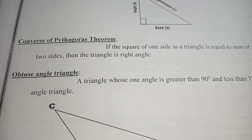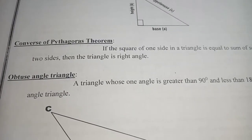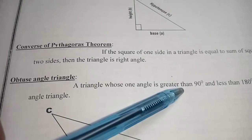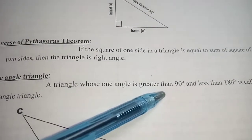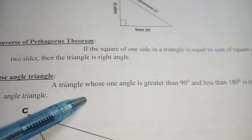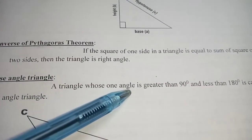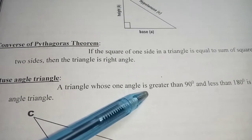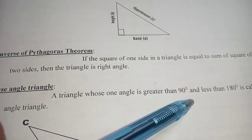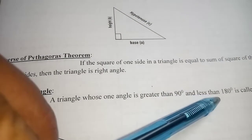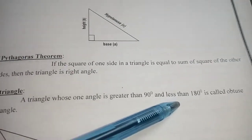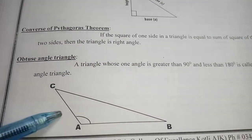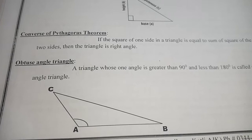The next definition is obtuse angle triangle. As you know, the measure of an obtuse angle is always greater than 90 and less than 180 degrees. So a triangle whose one interior angle is greater than 90 and less than 180 degrees is called an obtuse angle triangle.